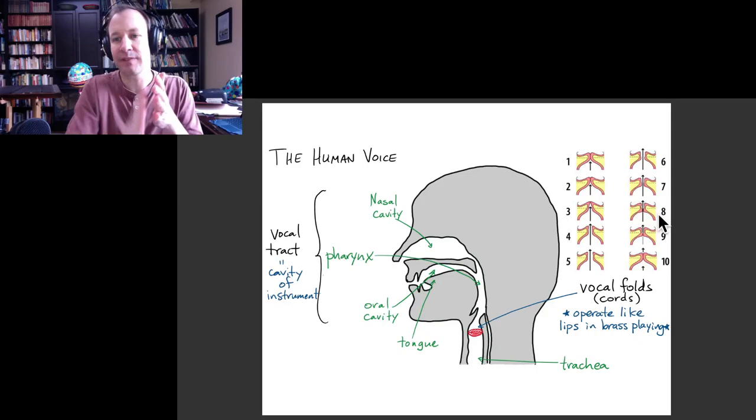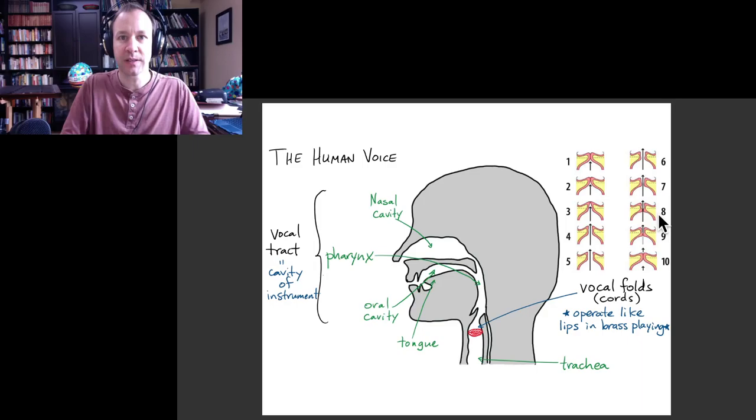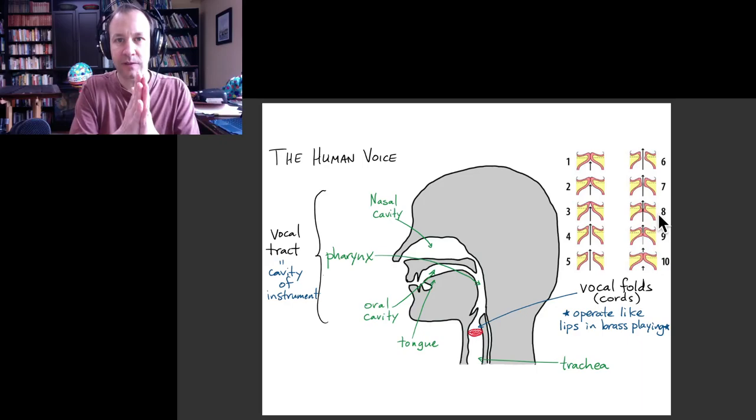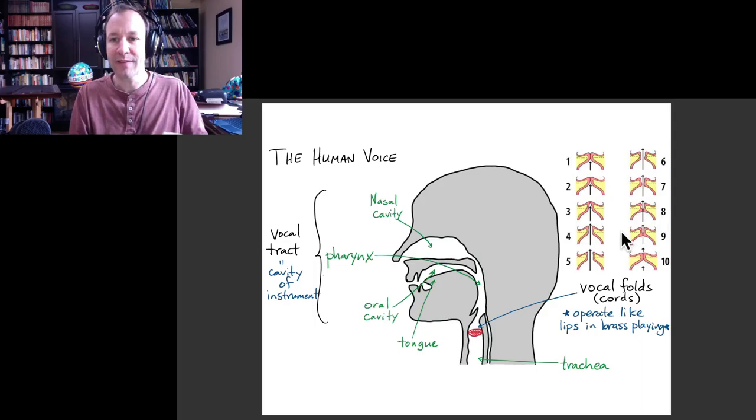There's another effect that I mentioned last time, which is that once the air starts flowing through there, then the pressure in between the vocal folds drops through this Bernoulli effect. That also contributes to the vocal folds coming back together. And then once they're back together, the cycle repeats.